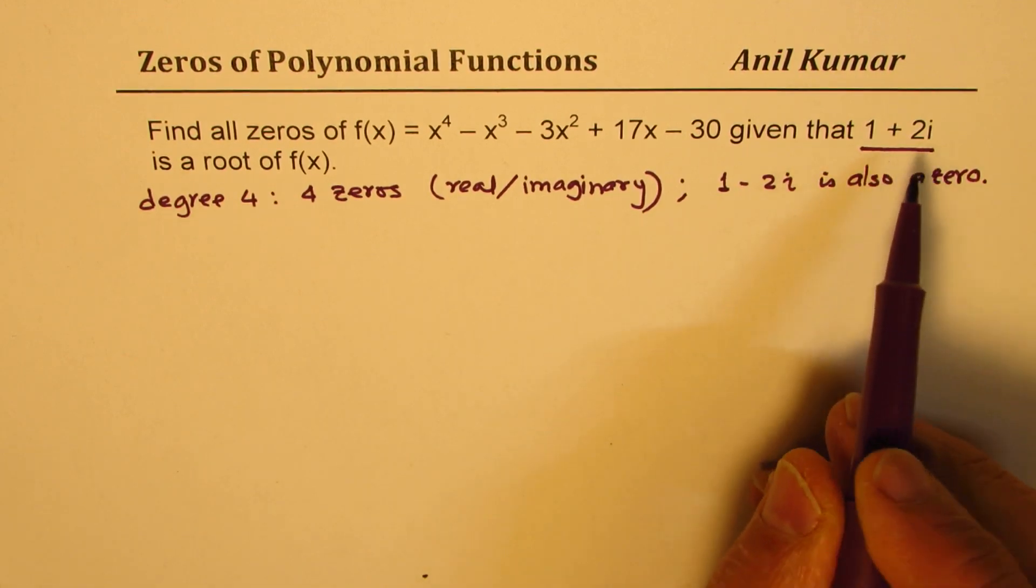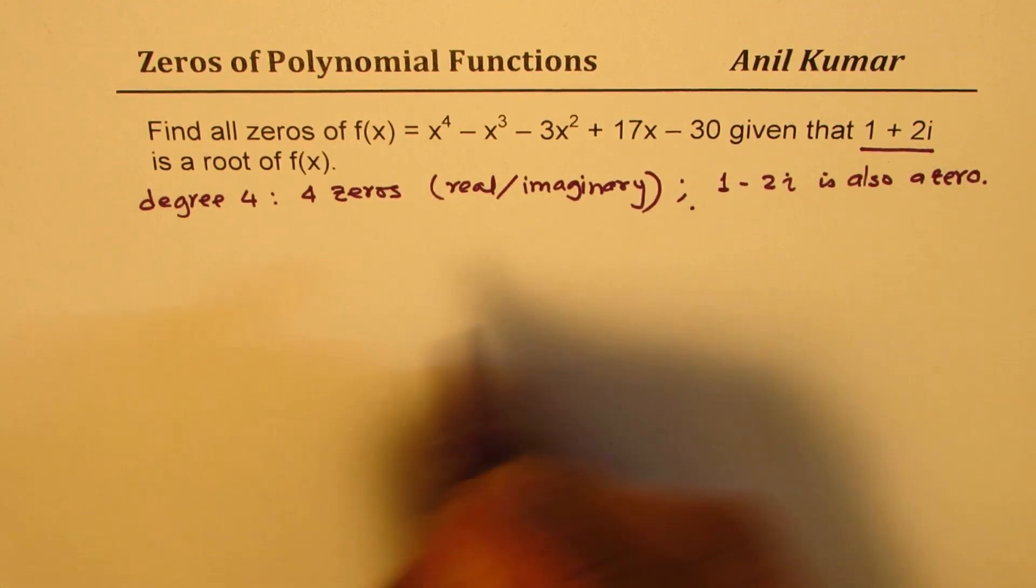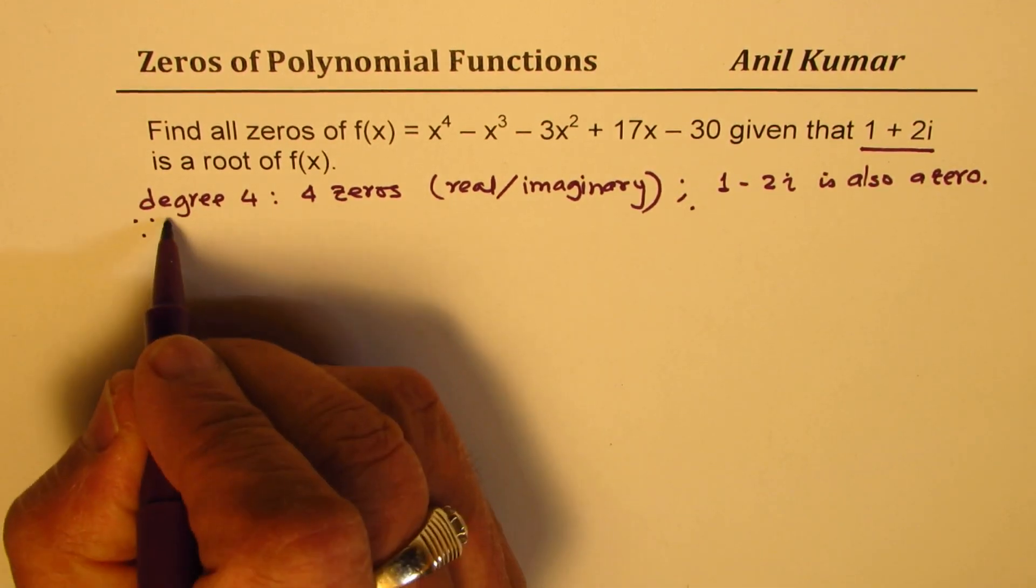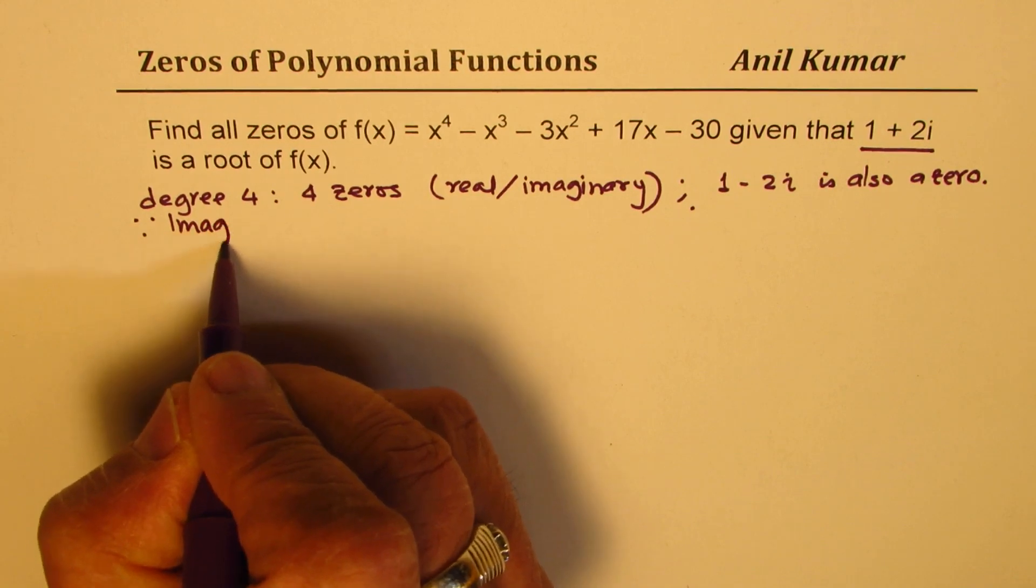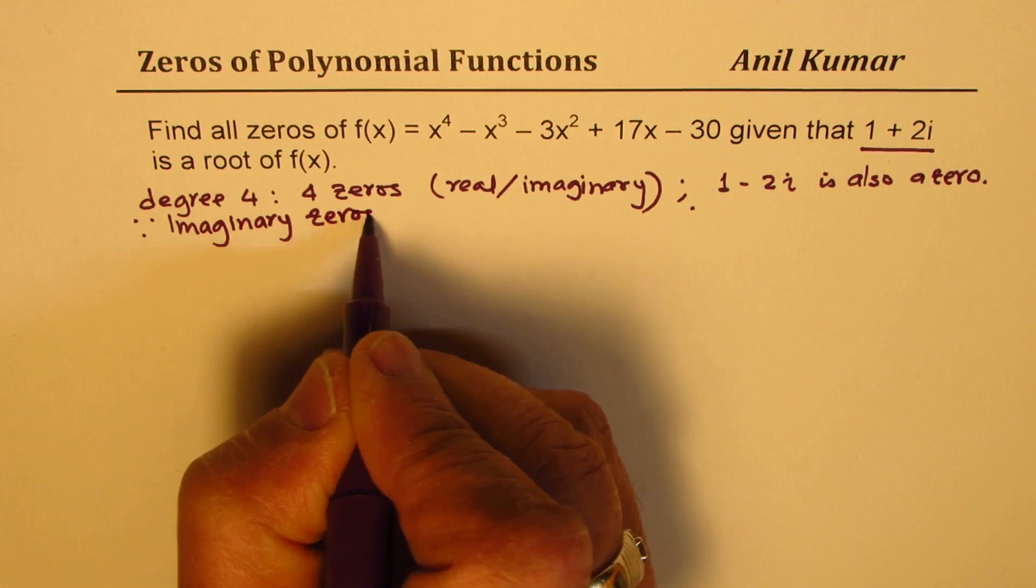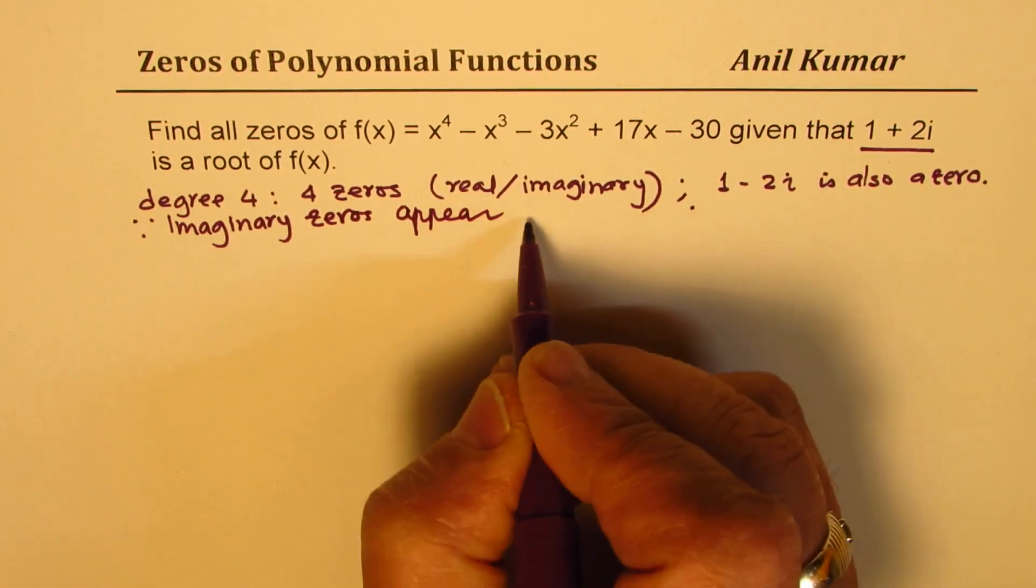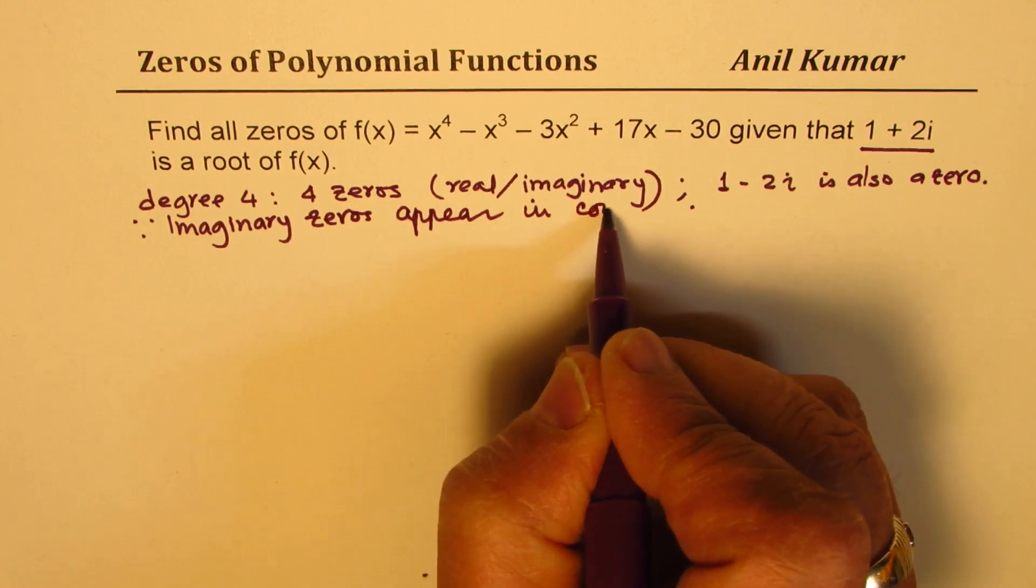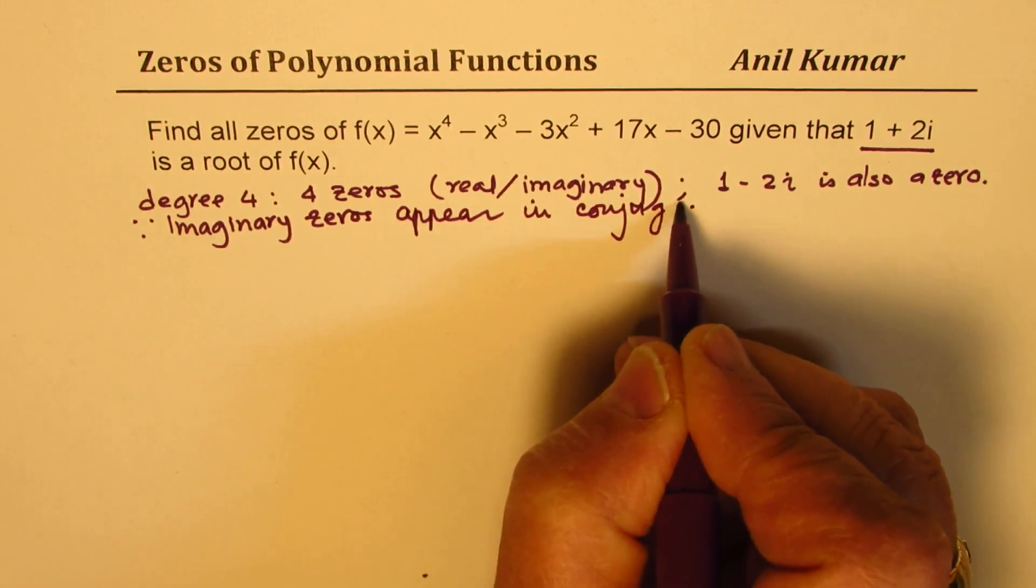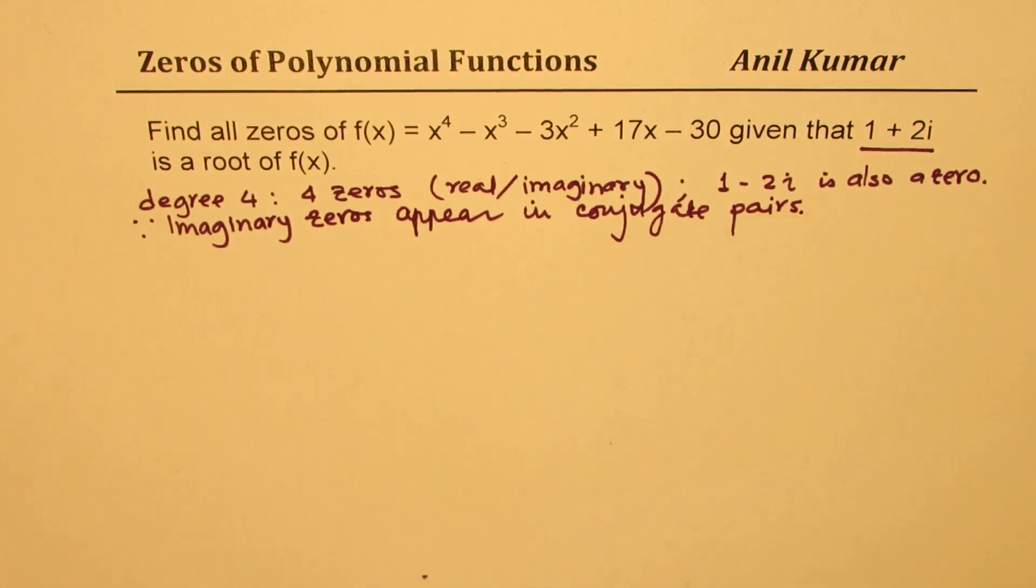Always the imaginary zeros appear in conjugate pairs. This is because imaginary zeros, or you can say roots, appear in conjugate pairs. This is very important to understand.